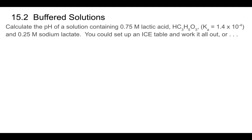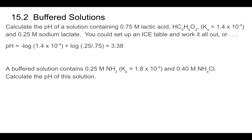For a buffer with 0.75 M lactic acid and 0.25 M sodium lactate (lactate being the conjugate base), we can use the Henderson-Hasselbalch equation: pH = −log(Ka) + log(0.25/0.75). This gives pH = 3.38. Using Henderson-Hasselbalch is much faster than setting up a full ICE table and yields the same result.